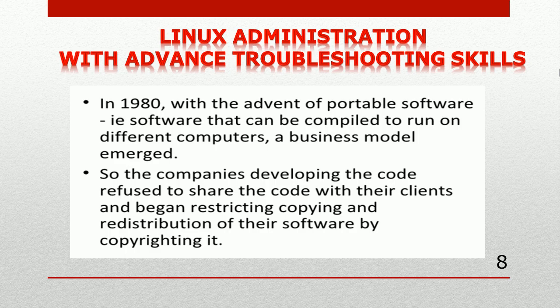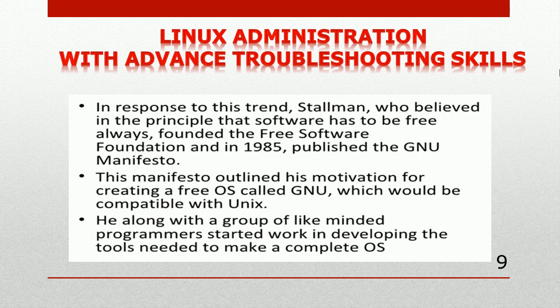In response to this trend, Stallman — who believed that software should always be free — founded the Free Software Foundation in 1985 and published the GNU Manifesto. GNU Linux is an operating system consisting of various fundamental programs needed by your computer so it can communicate and receive instructions from users, read and write to hard disks, tape drives, and printers. The most important part of the OS is the kernel.